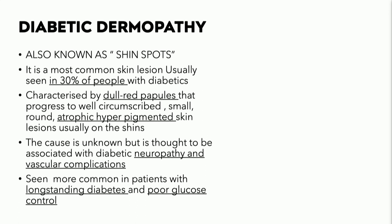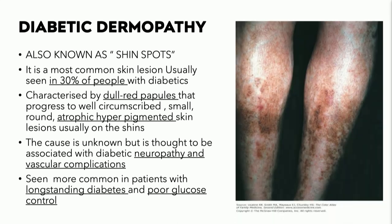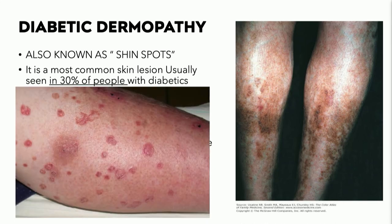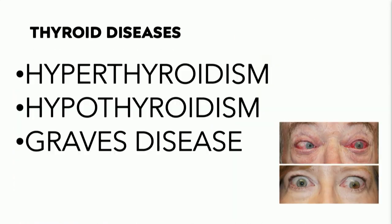We'll see shin spots, or diabetic dermopathy, in up to 30% of diabetics, typically those who are poorly controlled. We tend to see it more commonly in individuals with diabetic neuropathy and those with more peripheral vascular disease. It almost looks like old burnt-out stasis changes with hemosiderin deposition; there are small macules and patches, some becoming coalescent with atrophic centers.